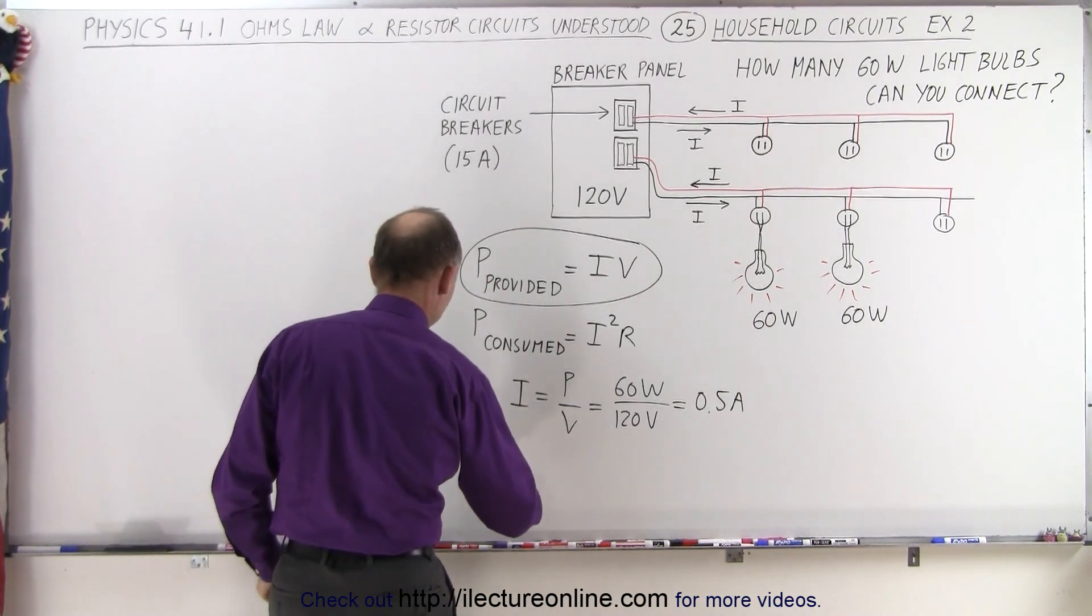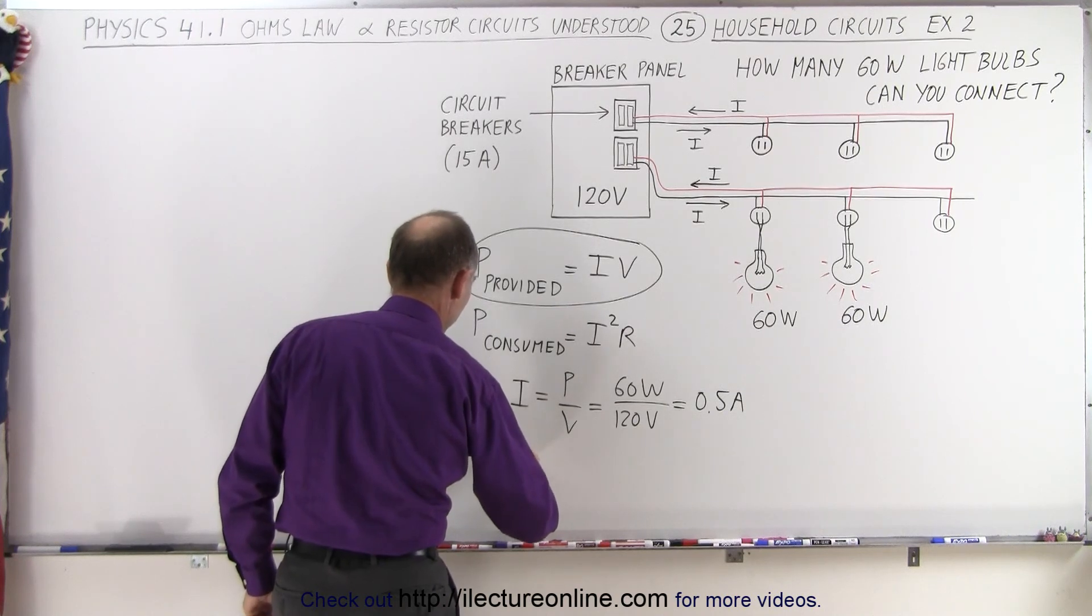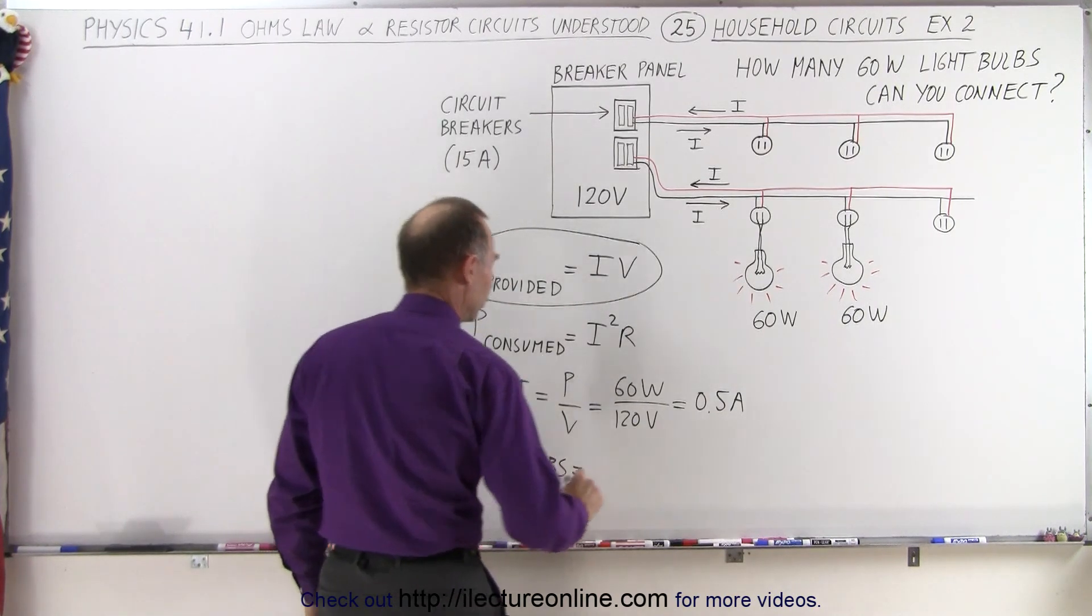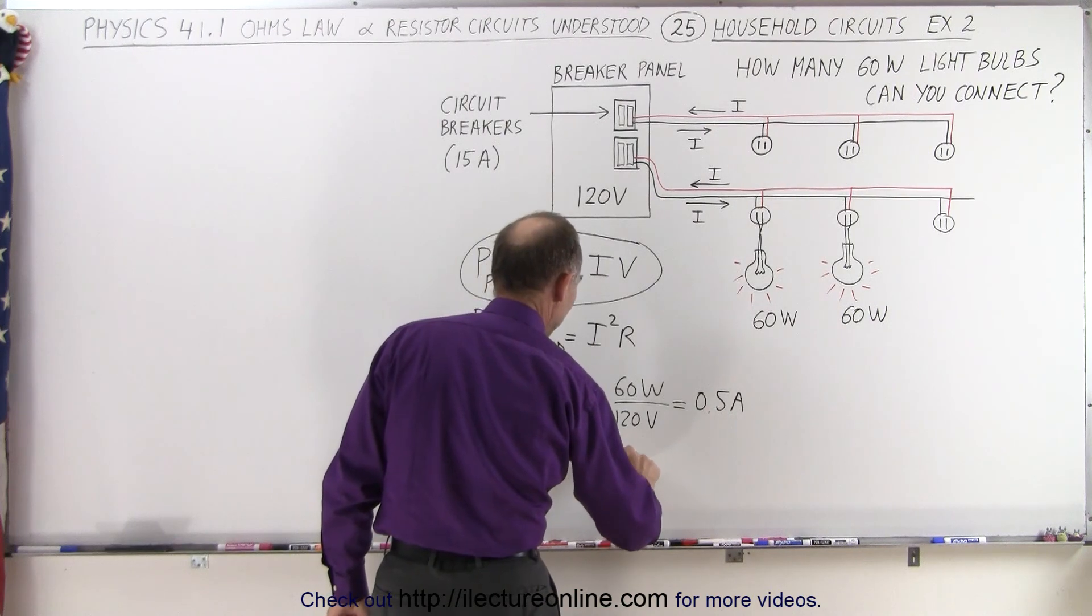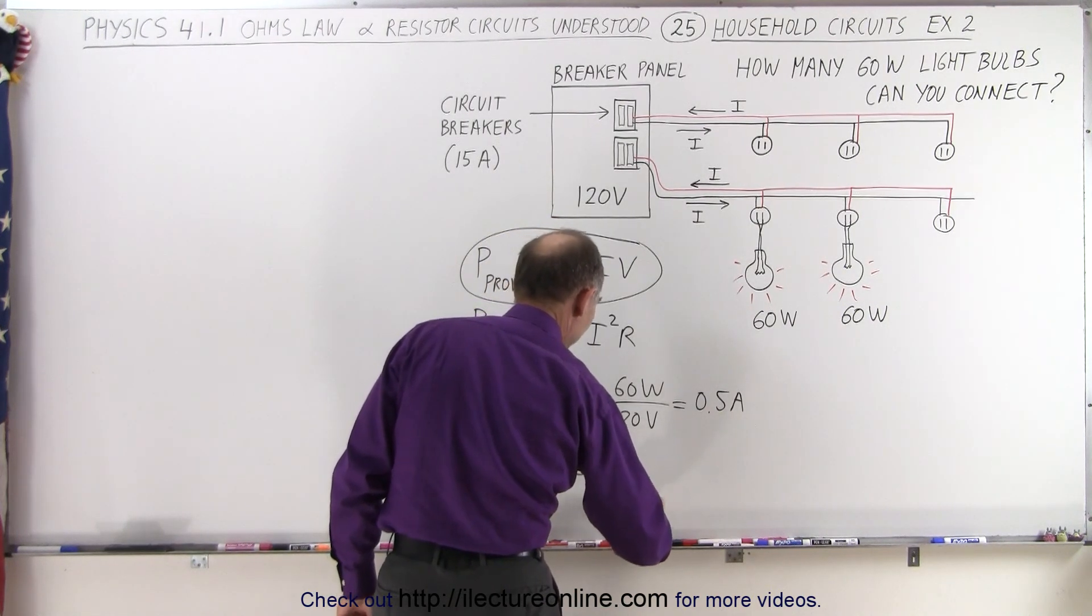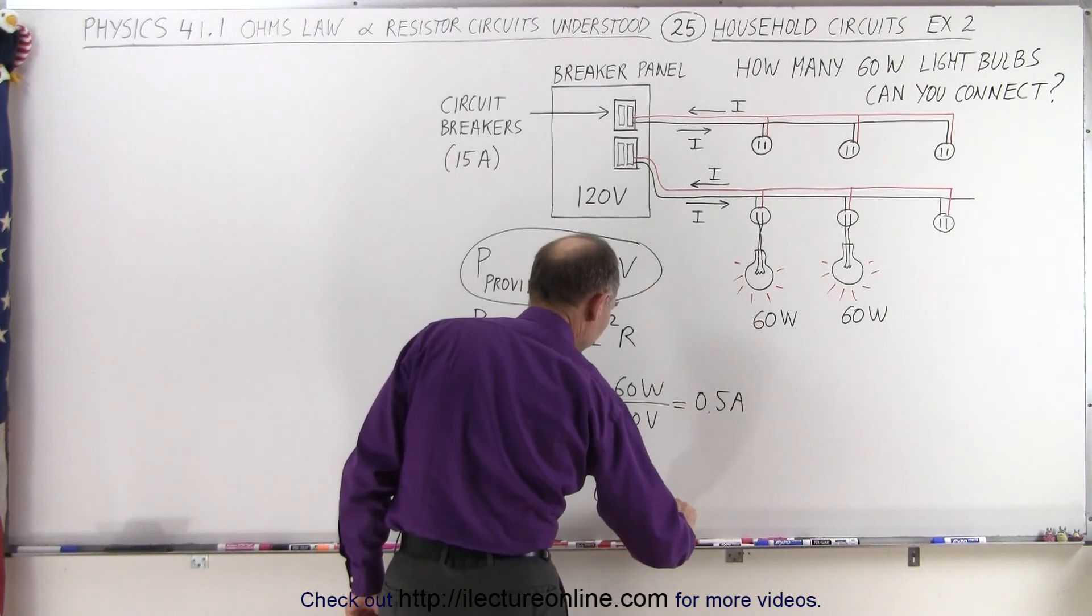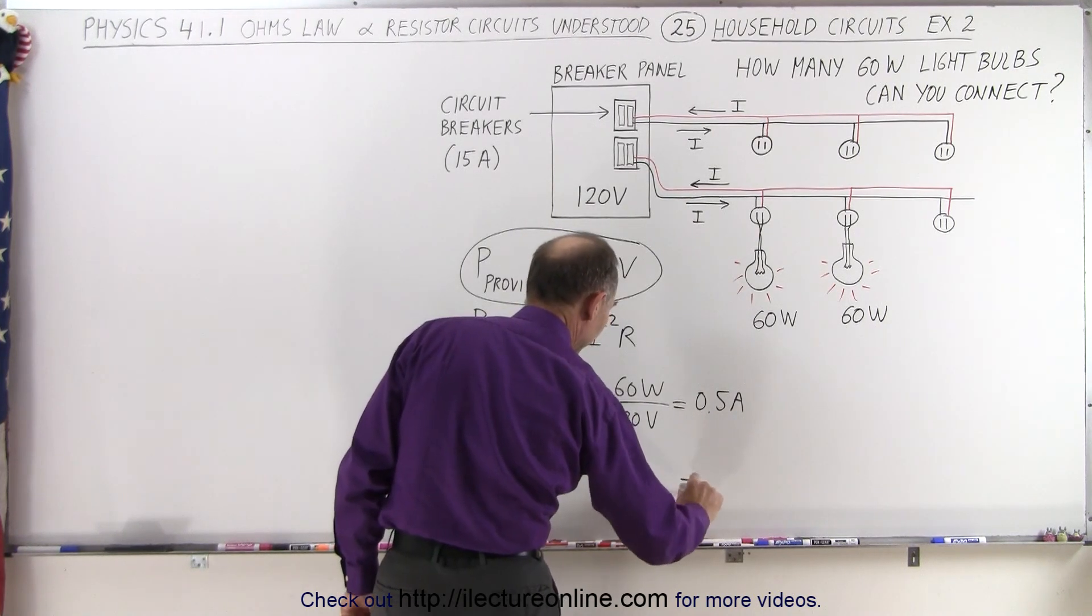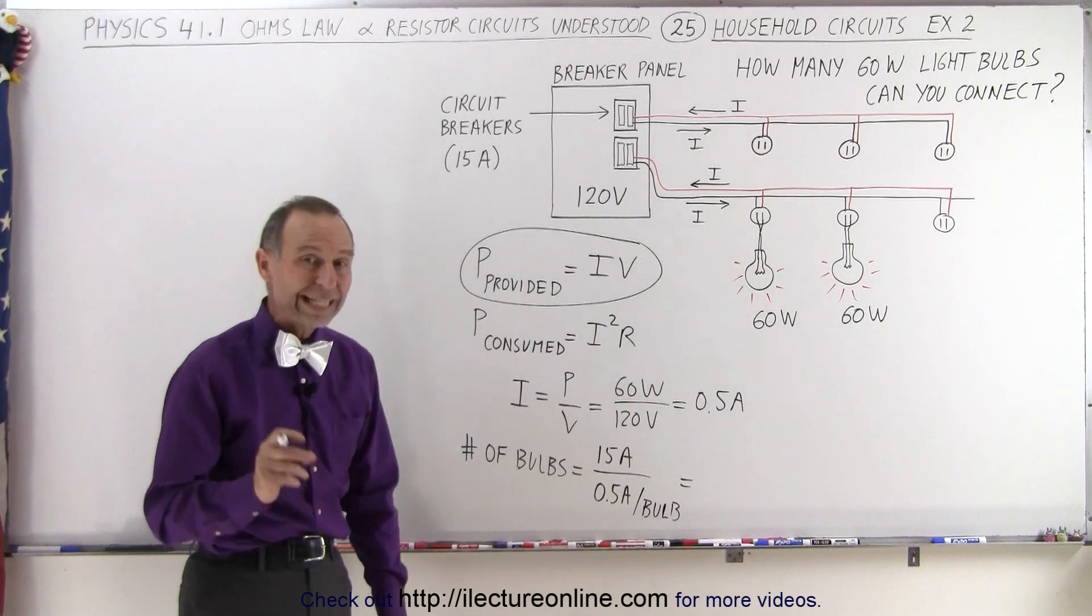So therefore the number of bulbs is equal to the rating, the 15 amps, divided by the 0.5 amps per bulb. So we take the total rating of the circuit and divide it by how much current each of the bulbs will draw.